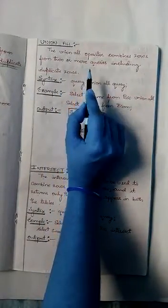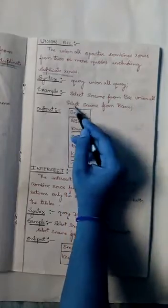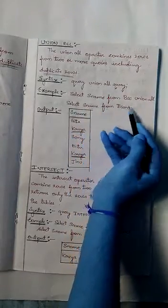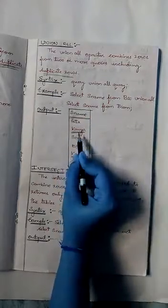Coming to the union all operator, the union all operator combines rows from two or more queries including the duplicate rows. That is, the union all operator includes the duplicate rows. Syntax: query union all query. Example: select student name from BAC union all select student name from BCOM. In the output of this query, we find duplicate rows.